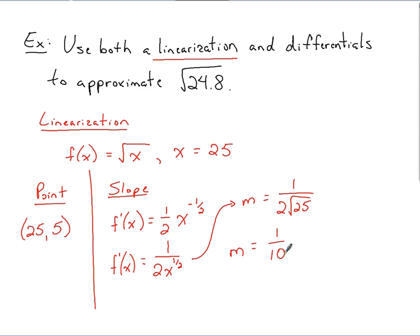We've got a point, we've got a slope. That means we can find an equation for the tangent line. So that was the next step we followed. So equation in point slope form is y minus the y value we found, which was 5, equals the slope that we found, which was 1 tenth. Times x minus the x value we started with, which is 25.